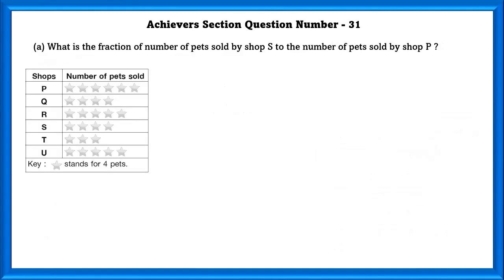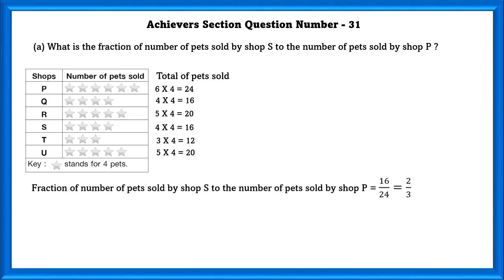Part A: What is the fraction of number of pets sold by shop S to the number of pets sold by shop P? Fraction of number of pets sold by shop S to the number of pets sold by shop P is equal to 16 by 24, and the equivalent fraction of that is equal to 2 by 3.